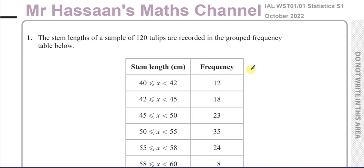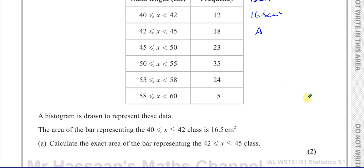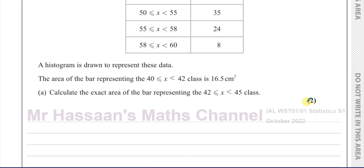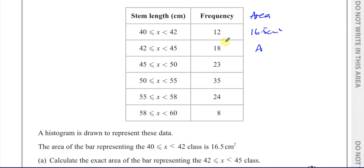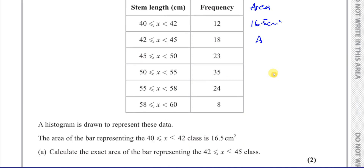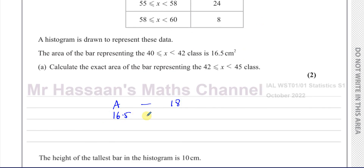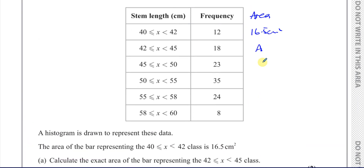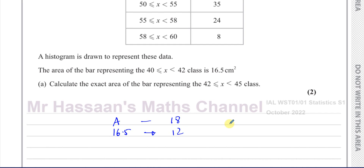So these frequencies have to be in proportion to each other. The area of the 40–42 bar is 16.5 square centimetres, and we've got to find the area of the 42–45 bar. The area we need has to represent 18 tulips, and the area we know for the first bar — 16.5 cm² — represents 12 tulips. So we want them in proportion: A = 16.5 × 18 ÷ 12.